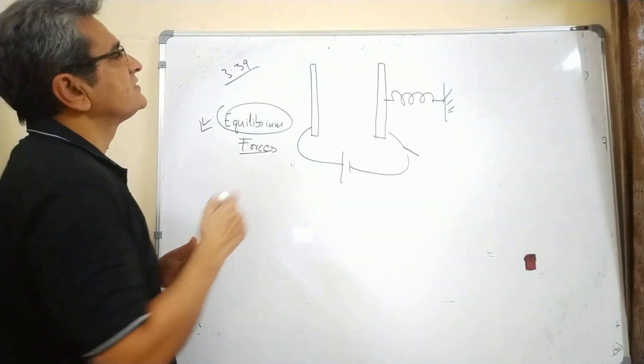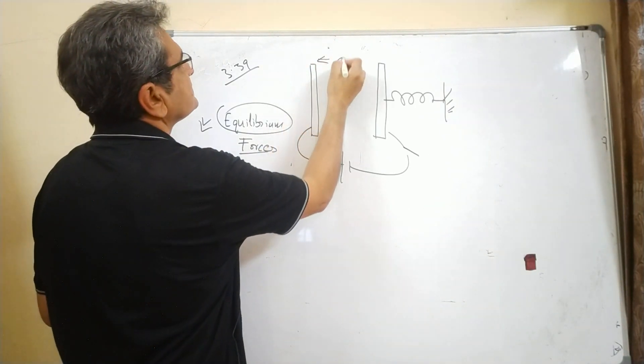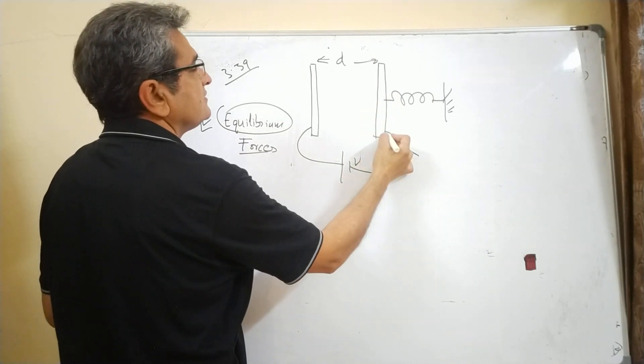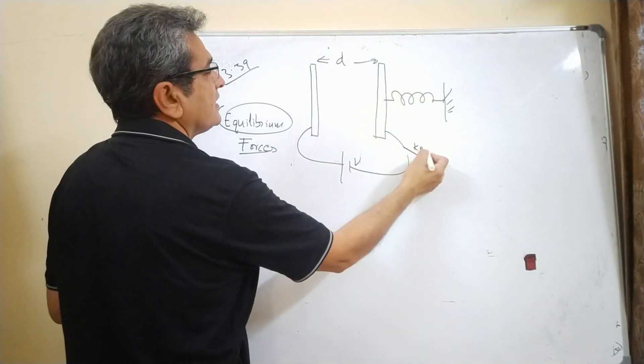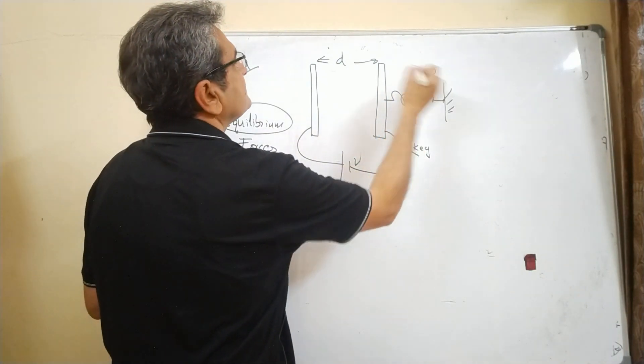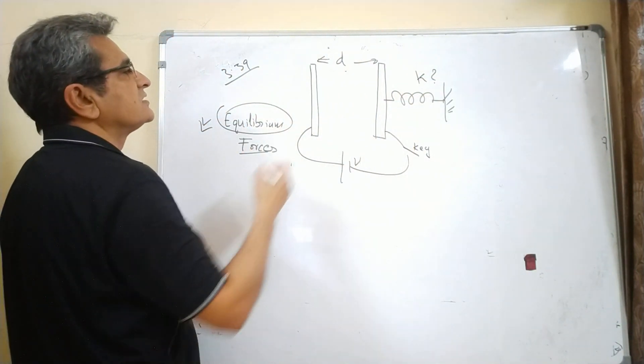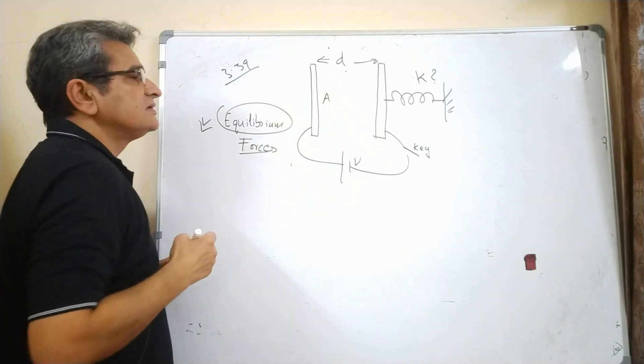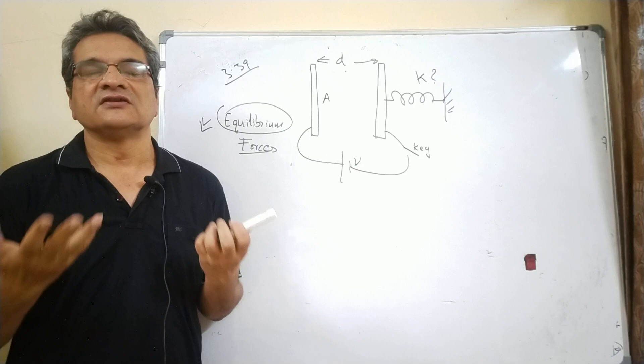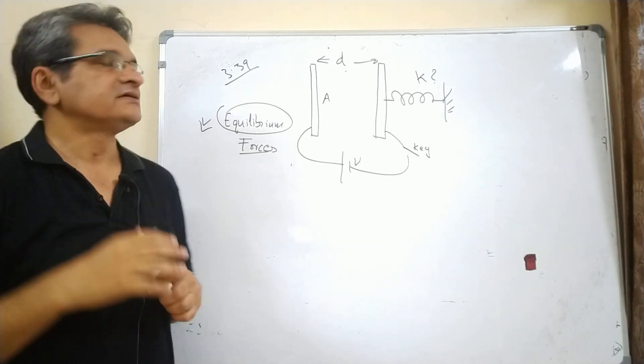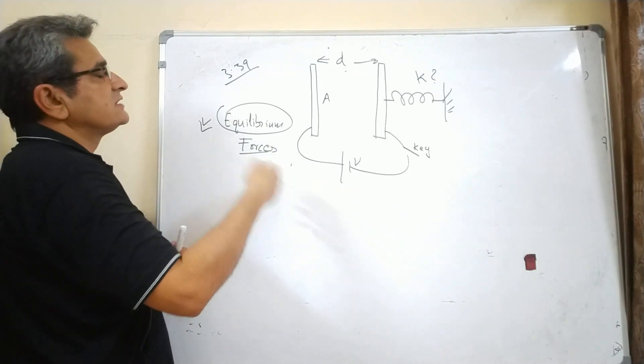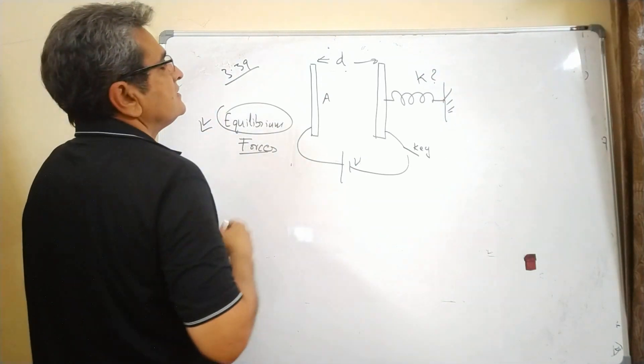Here in this question, what it says is that this is a capacitor which has distance d, there is a battery, voltage is not given. Anyway, there is a key and there is a spring, spring constant is not given. See, nothing is given. Only this d is given. Even this v is not given. Area, nothing is given. Another thing is that the answer will not have this information, will not be coming in your answer. It's a hint that these things are not material because they will all get cancelled. Whatever is not given, it means it is getting cancelled.